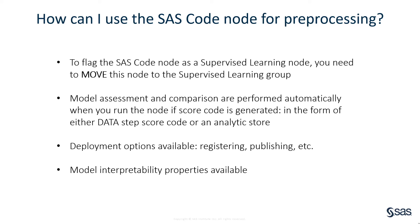To do that, after adding the node to your pipeline, click on it and select Move, which will give you the choice of supervised learning. Once you move it there, it will be treated as a supervised learning node. This means that if you set up your code to generate the scoring code for calculating your predictions as either Datastep or DS1 scoring code or an analytics store using the macro variables provided, an assessment of your model will be performed automatically and your model will be included in model comparisons along with any other models in your pipeline.